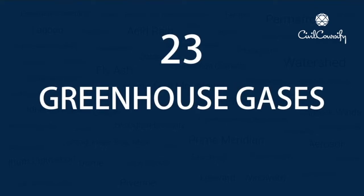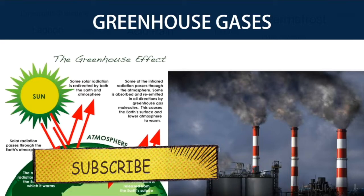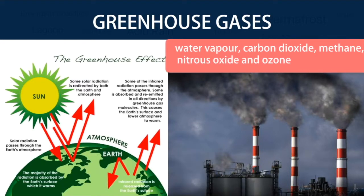Number 23: Greenhouse Gases. A greenhouse gas is a gas in an atmosphere that absorbs and emits radiation within the thermal infrared range. This process is the fundamental cause of the greenhouse effect. The primary greenhouse gases in the Earth's atmosphere are water vapor, carbon dioxide, methane, nitrous oxide, and ozone.